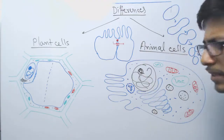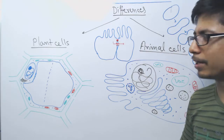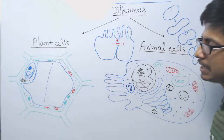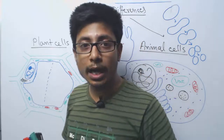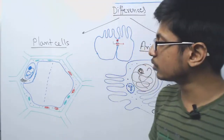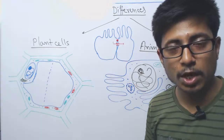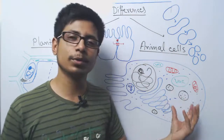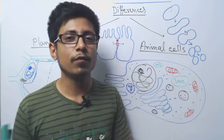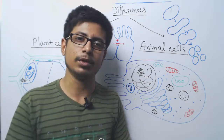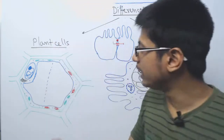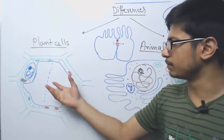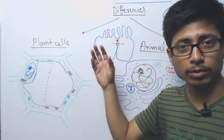Another major difference: both plant and animal cells can store carbohydrates, but plant cells store carbohydrates in the form of starch — stored in plastids or vacuoles — while animal cells store carbohydrates in the form of glycogen. Animals store glucose as glycogen for the long run, for example in muscle and liver, while plant cells store glucose as starch.